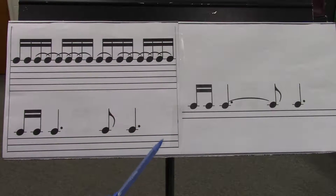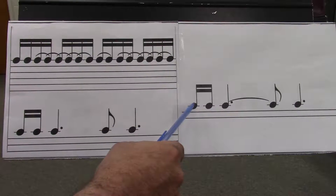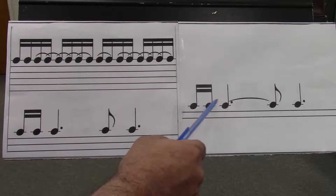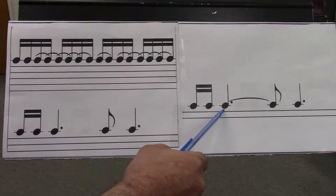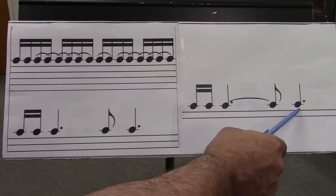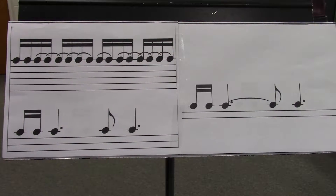Let's do with the ties. Ready, go. One, e, and, da. Two, e, and, da. Three, e, and, da. Four, e, and, da.